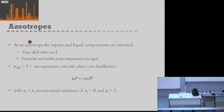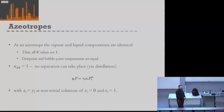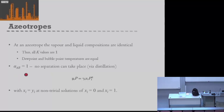The problem we have is that at our azeotrope, our vapour and liquid compositions are identical. Because of that, the K-value for every single component in our system is 1 at that point, and our dew point and bubble point temperatures are also the same. This essentially means we can't separate those components by distillation at that point — our relative volatility alpha is equal to 1, so no separation can take place.